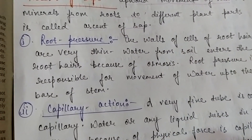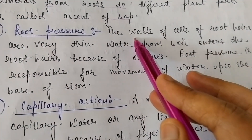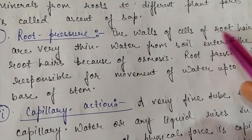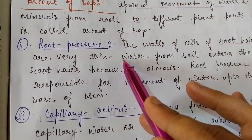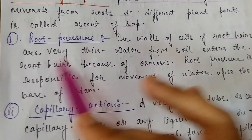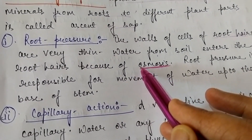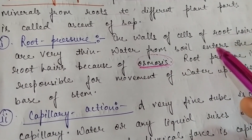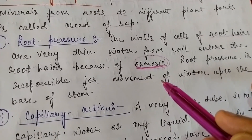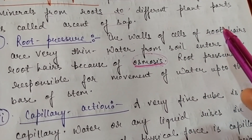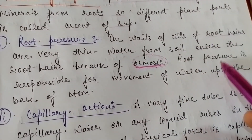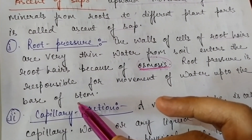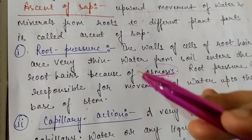The first condition is root pressure. In root pressure, how does water travel to the leaves? Root hairs are present in the root, as you all know. The cell walls of root hairs are very thin. So water from the soil enters the root hair because of osmosis. Osmosis is a process in which water molecules move from high concentration to low concentration. So all the water from the soil enters through osmosis. Root pressure is responsible for the movement of water up to the base of the stem.